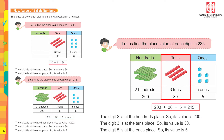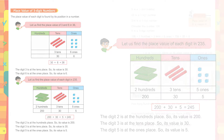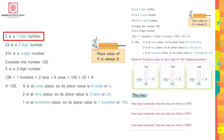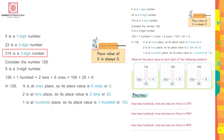The digit 2 is at the hundreds place, so its value is 200. The digit 3 is at the tens place, so its value is 30. The digit 5 is at the ones place, so its value is 5.